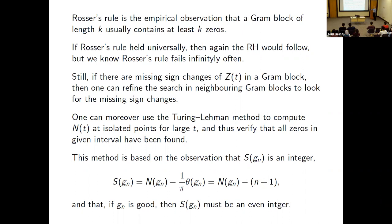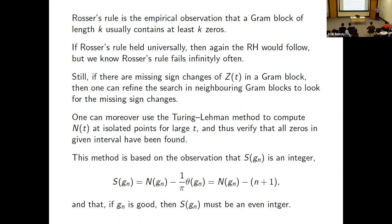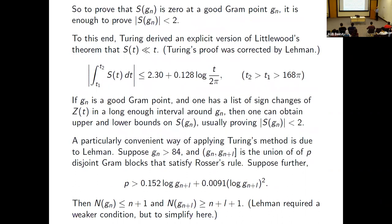If you're at a good gram point, either you missed an even number of zeros on the critical line — so the pattern of good gram points was undisturbed — or you missed zeros off the critical line, but by symmetry about the critical line you'd have to miss two. Either way you're missing an even number, so S(gₙ) must be even.